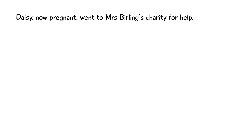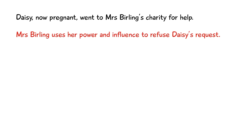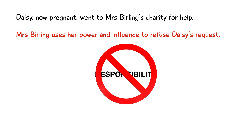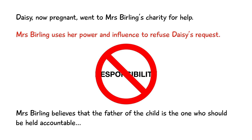The Inspector then turns his attention to Mrs Birling, and it's revealed that Daisy — who was pregnant at this point — went to Mrs Birling's charity to ask for financial support. Mrs Birling used her influence and power to persuade the charity to refuse to help Daisy. The Inspector presses Mrs Birling further, but she refuses to accept any responsibility whatsoever, passionately asserting that she believes the person who was truly responsible was the father of the child, and that the Inspector should be looking for him instead.